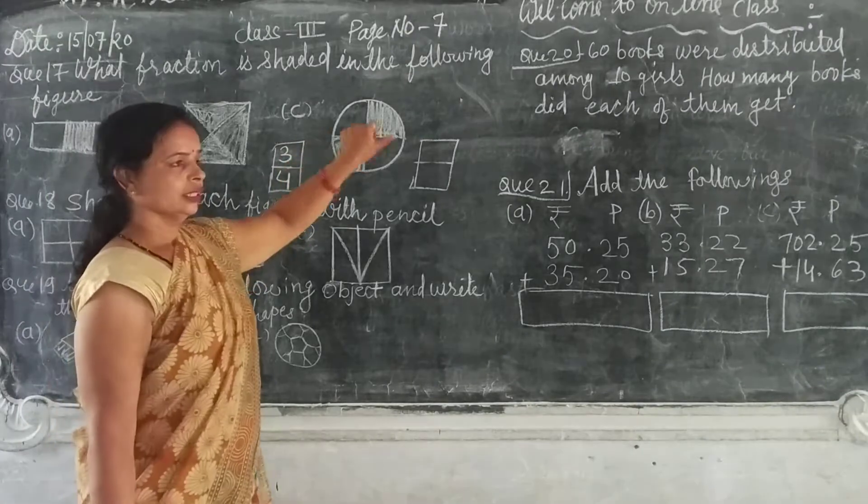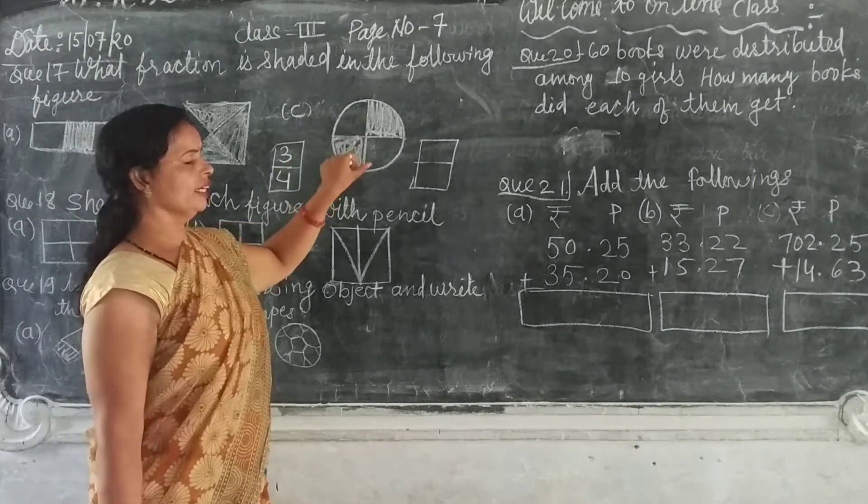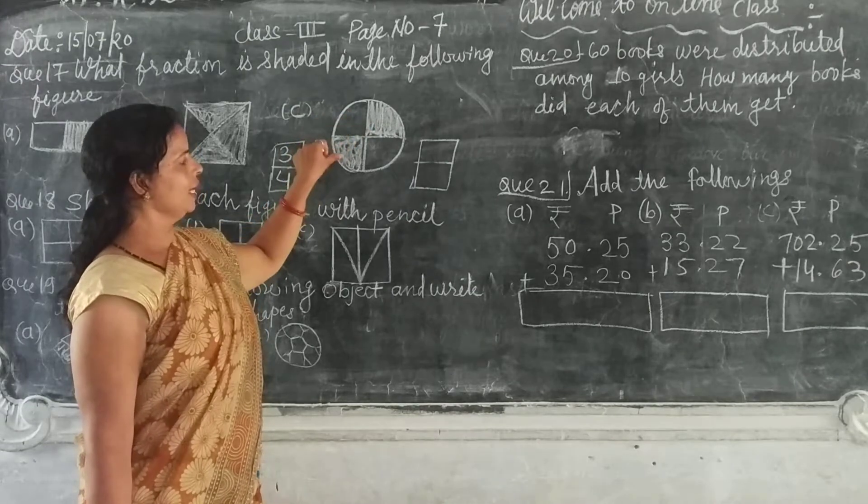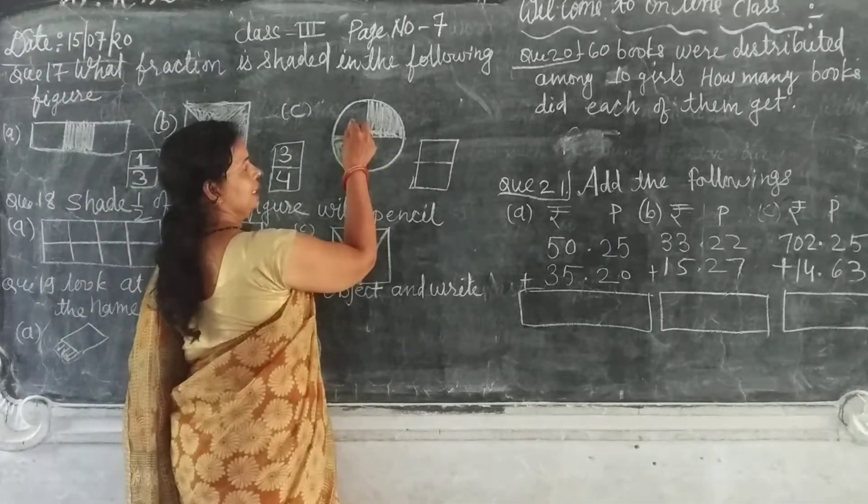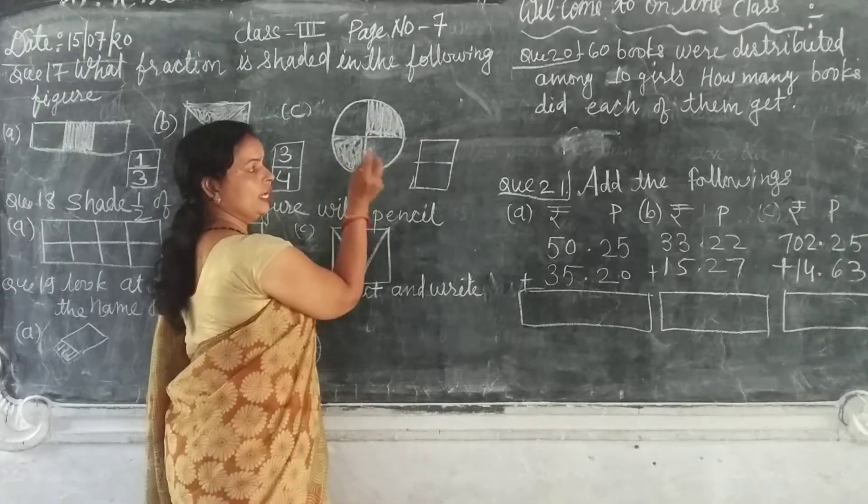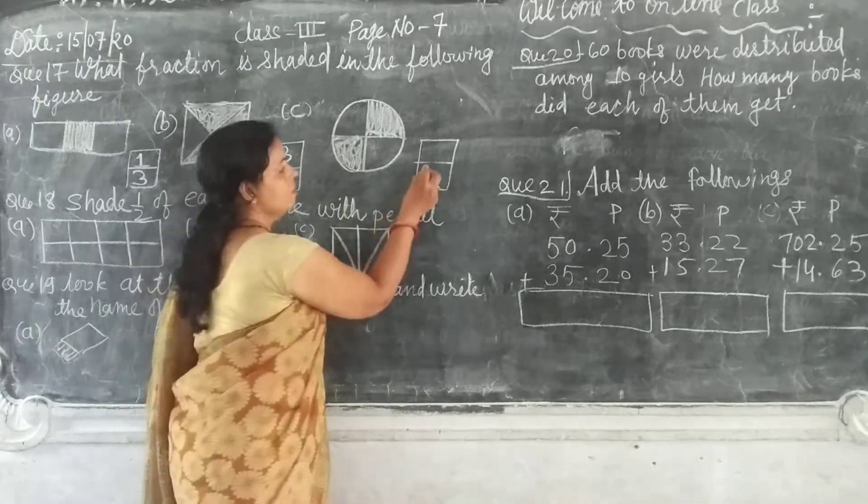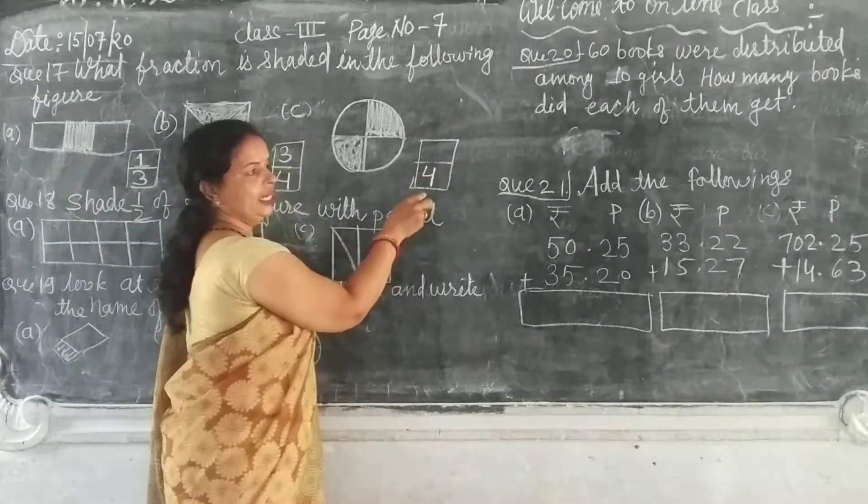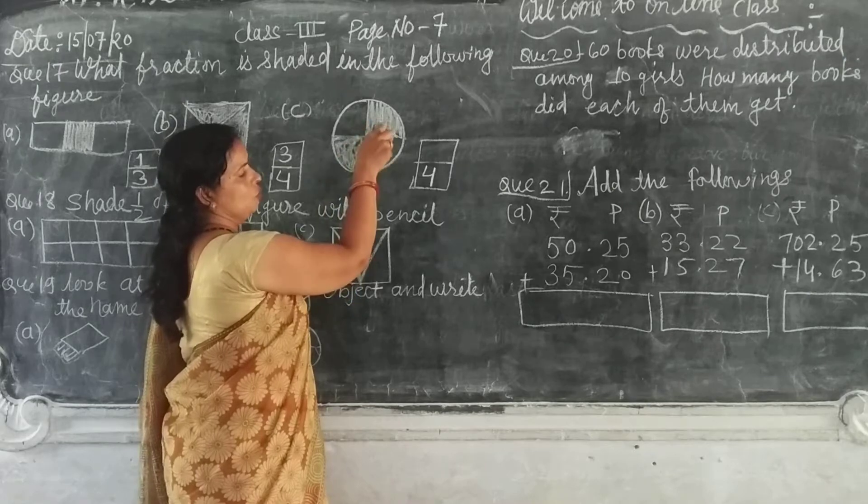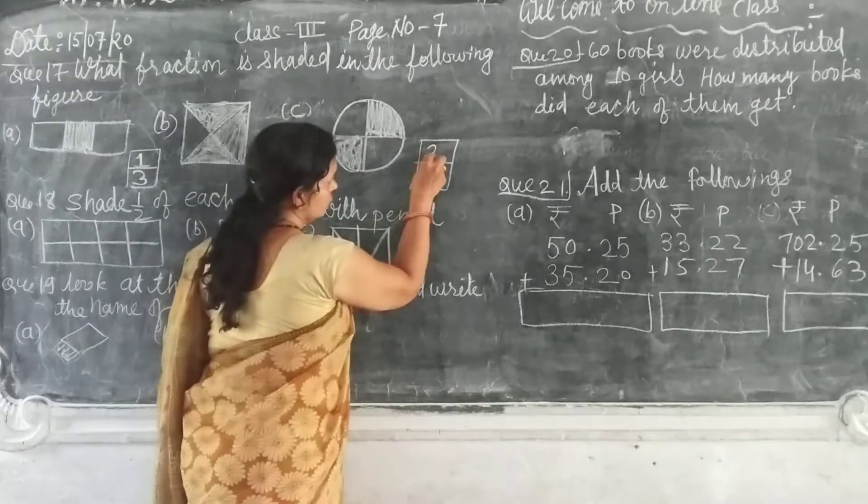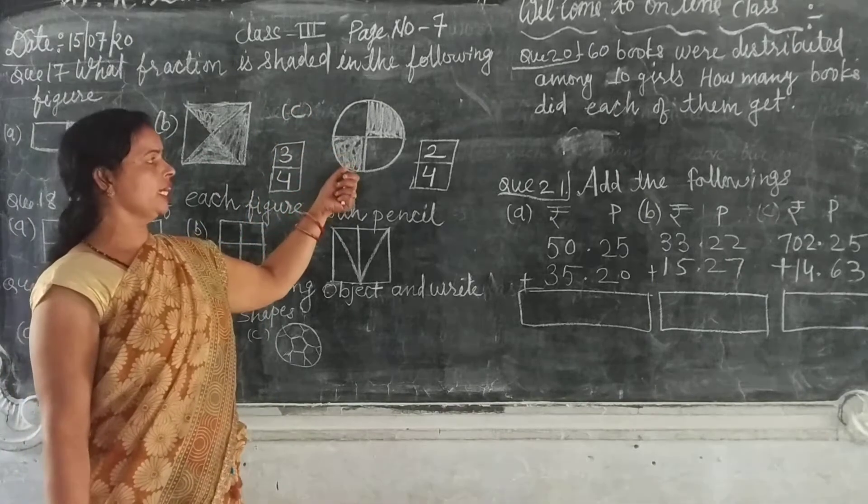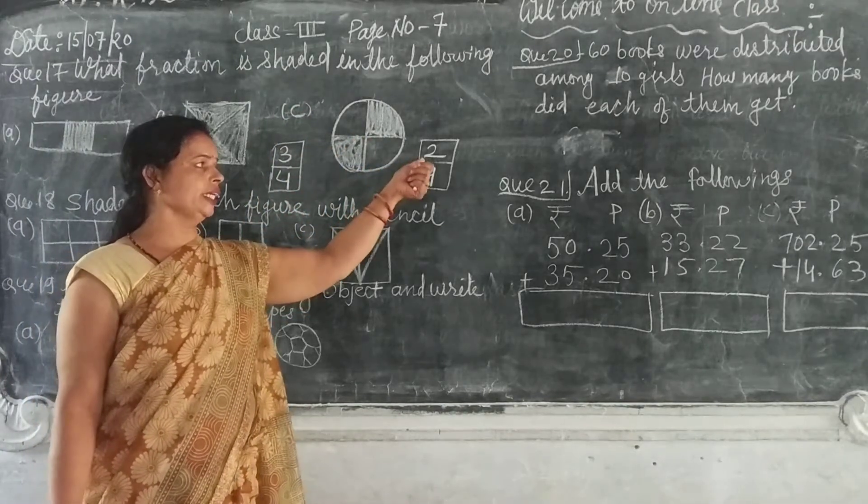Third is circle with 4 equal parts, which is 2 parts are shaded. The total parts are 1, 2, 3, and 4. 4 parts are on this way here. Now 4 parts are on this way. The shaded part is 1, 2. Then 2 here. The shaded part is the shaded part. The fraction is the same.